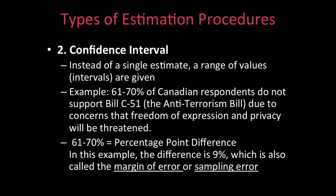The second form of estimation is confidence intervals. This type of sampling provides a range of estimation values for a given population rather than a single number. Confidence intervals are safer to use than point intervals, as you are more likely to include the population parameter when a range of values is given.